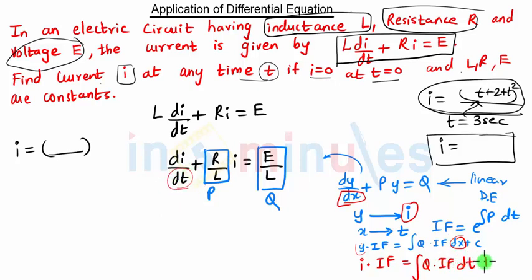As you can see, these two equations are similar. The formula for IF is this, and thus the final solution to find the current i is this.